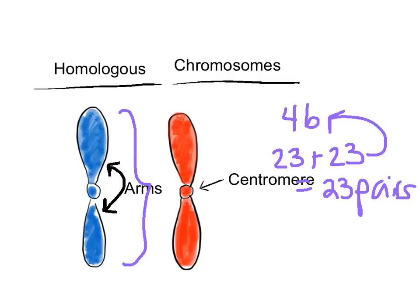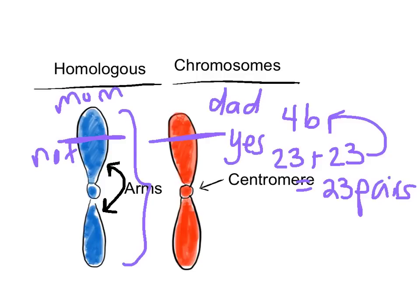For example, the gene for whether or not you can roll your tongue, I'll pause while you all try to roll your tongue, will be located at the same position on both homologous chromosomes, for example, right here. However, although these genes code for the ability to roll your tongue, they might not actually both code for the same thing. So for example, this one from your mom might code for not being able to do it, while this one from your dad might code for you actually being able to do that. And how that affects you, we're going to be learning in a different lesson.